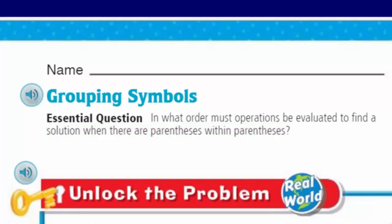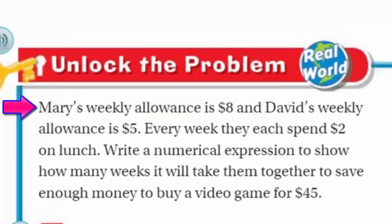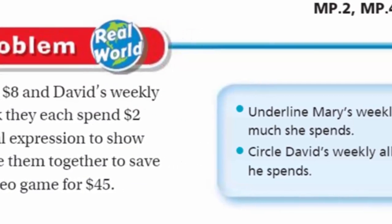I'm not scared because I know I just need to unlock the problem - real world, baby! It says Mary's weekly allowance is eight dollars and David's weekly allowance is five dollars. Every week they each spend two dollars on lunch. Write a numerical expression to show how many weeks it will take them together to save enough money to buy a video game for 45 dollars.